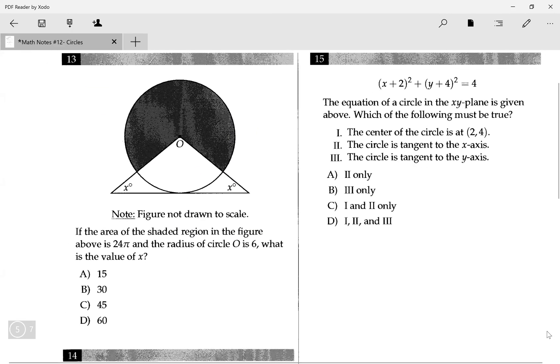Finally, I'm going over number 13. The area of the shaded region in the figure above is 25π and the radius of circle O is 6. What is the value of x? So if the area of the shaded region is 24π and radius is 6, that means the area of the whole circle would be 36π, and if we divide that by 24π, we get 3...